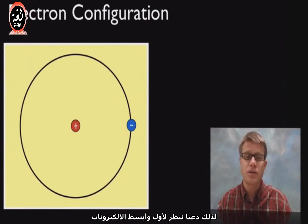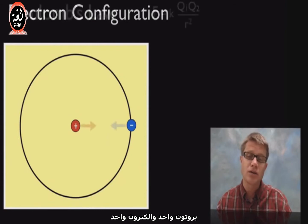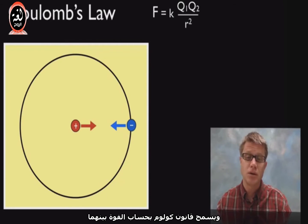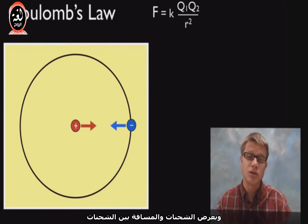Let's look at the first and simplest of electrons — we've got hydrogen. One proton, one electron. Coulomb's law allows us to quantify the force between the two, and it basically comes down to the charges and then the distance between the charges.